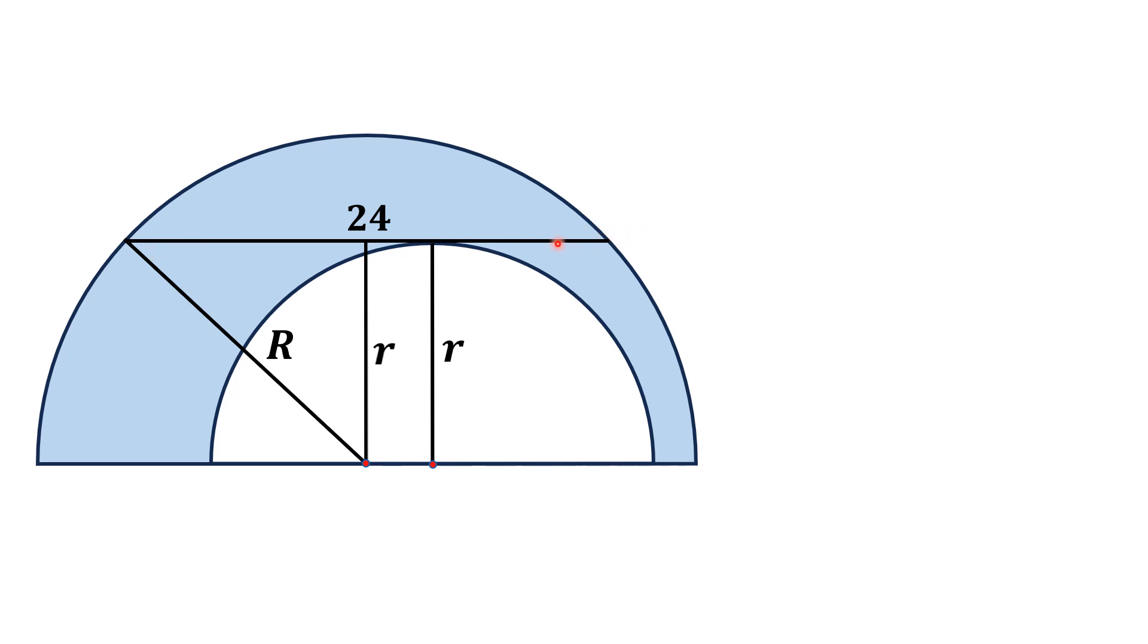So this chord has length 24, and this line will divide it into two equal parts. This part has length 12 and this side also has length 12. Since this is perpendicular to the chord, this angle is 90 degrees, and this portion shaded pink is a right triangle.